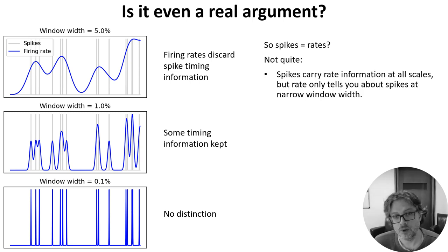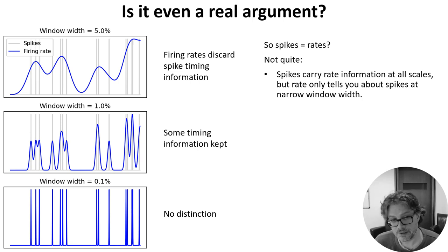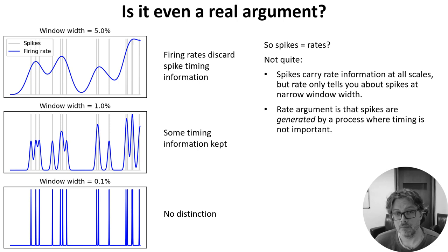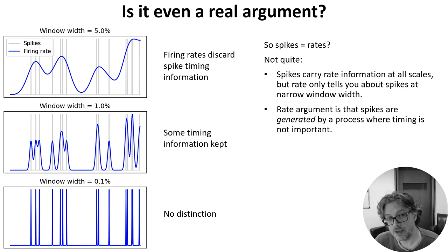Firstly, while spikes can tell you everything you need to know about firing rate at any timescale, the reverse isn't true — only the narrow smoothing windows tell you about the spike times. Secondly, the argument is not just that the concept of rates can do anything that times can do, but that spikes are actually generated by a process where spike timing is not important. And that's a much stronger statement.